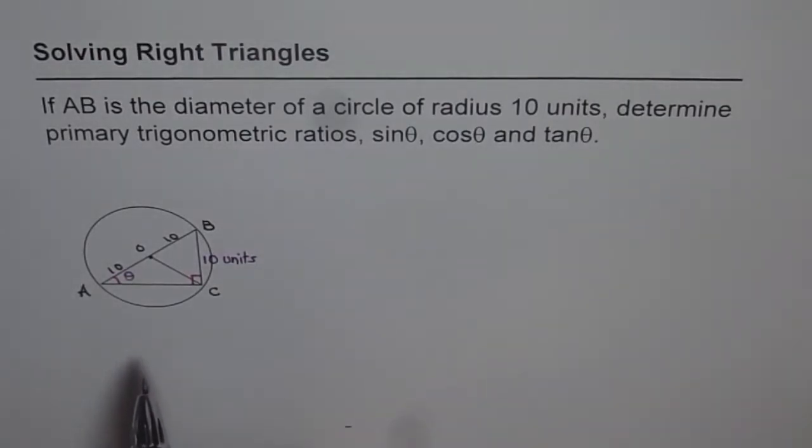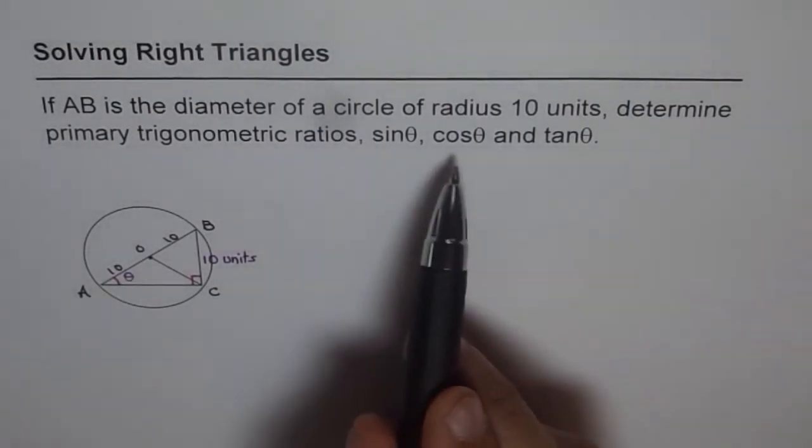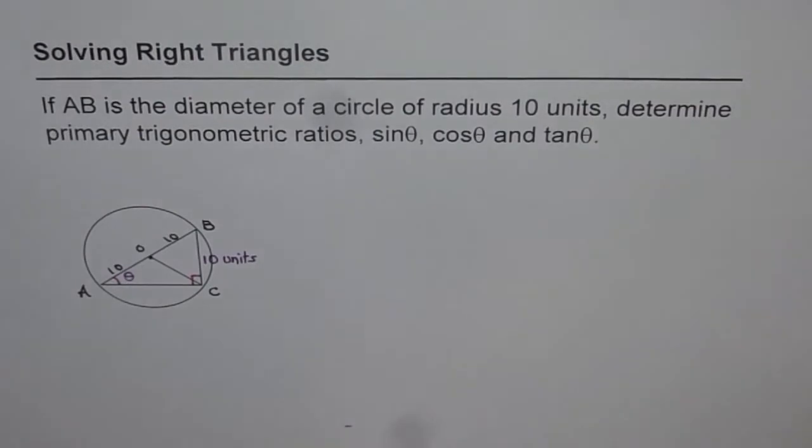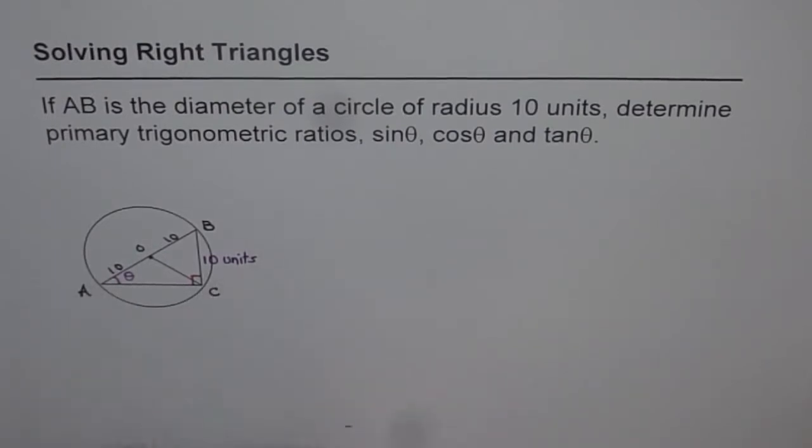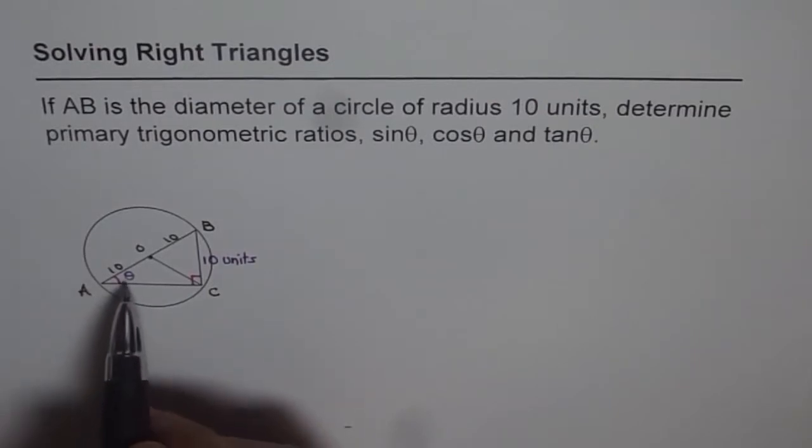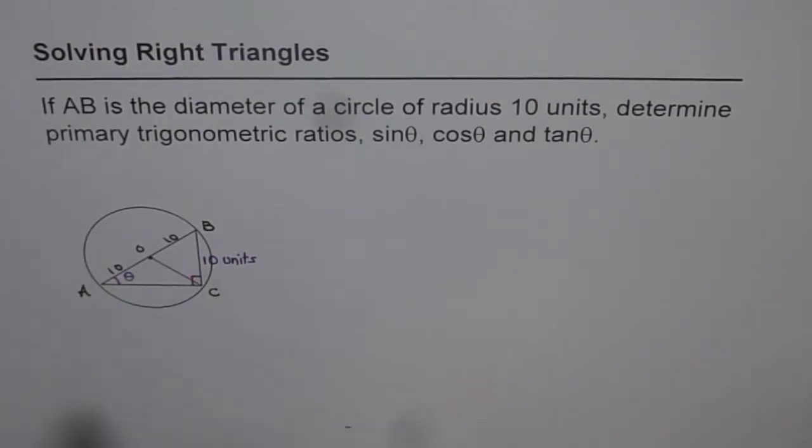What we need to find is the value of sin θ, cosine θ and tangent θ. We can adopt an approach by solving first the triangle and then finding the angles. The other approach is find the angle and then the trigonometric ratios. We will use the first approach, which is solving the right triangle.